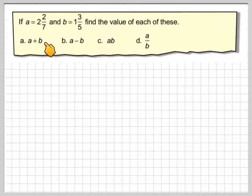If A is equal to 2 and 2 sevenths and B is 1 and 3 fifths, find the value of each of these: A plus B, A minus B, AB, A divided by B. So we've got A is equal to 2 and 2 sevenths and B is 1 and 3 fifths.